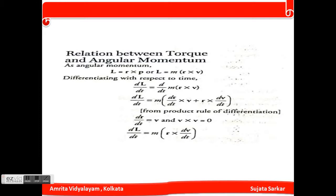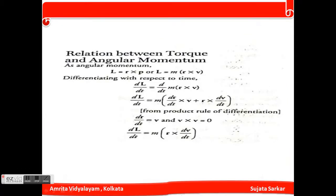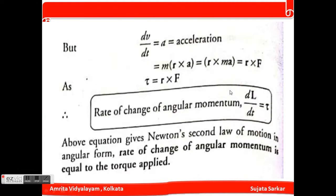There is a relationship between torque and angular momentum. Since L equals r cross p, or L equals m(r cross v), we take dL/dt. Since m is a constant term, we get m times d/dt(r cross v), which expands to m times [(dr/dt cross v) + (r cross dv/dt)]. Since dr/dt equals v, and v cross v is always zero, we get dL/dt equals m(r cross dv/dt), and since dv/dt equals a, this gives m(r cross a) equals r cross ma equals r cross F.